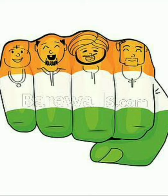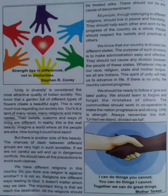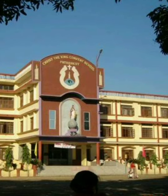Let us see what makes Indian society more beautiful. Unity in diversity is considered the most attractive quality of Indian society — one of the most important qualities of our Indian society. You know that a garden full of different types of flowers creates a beautiful sight. Imagine coming back to our school and seeing that in our garden we have varieties of flowers.